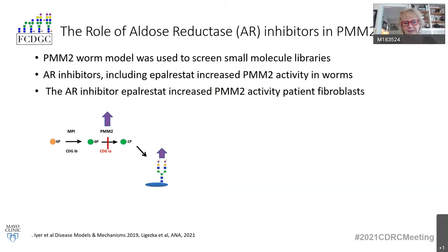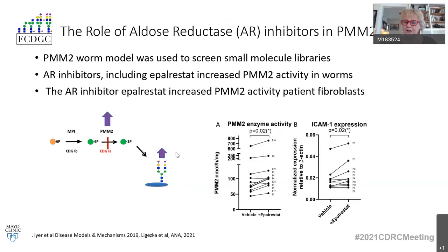Upon this finding, we also tested epalrestat — one of these candidate drugs — in fibroblasts of patients, and we found a positive response. Not in all patients, but several responded in a positive way, and some quite significantly increased their enzyme activity. ICAM-1, which is a marker of glycosylation because it is a highly glycosylated protein measurable on the surface of patient fibroblasts, showed that several patients improved their glycosylation on epalrestat therapy.